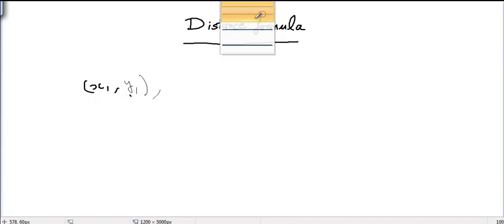In this video, we will learn about the distance formula, which is used to calculate distance between any two given points. Let's suppose we are given two points (x1, y1) and the second point is (x2, y2), and we want